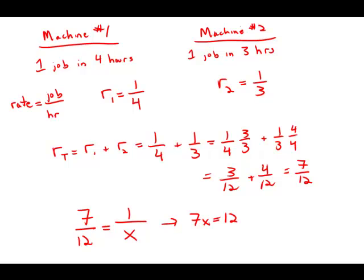X equals twelve over seven. Twelve over seven we write as a mixed numeral: one and five-sevenths. This is answer choice C.